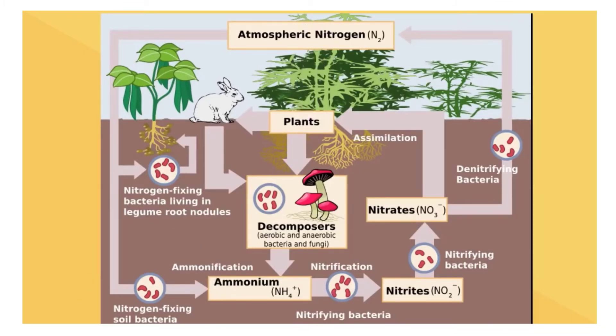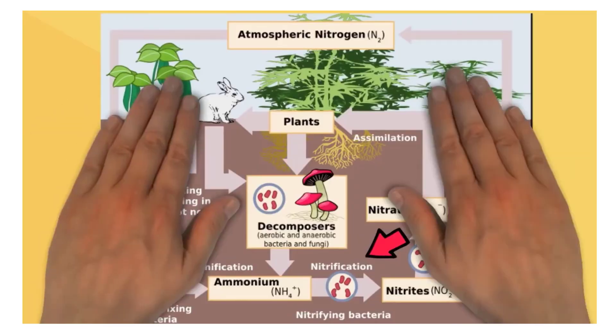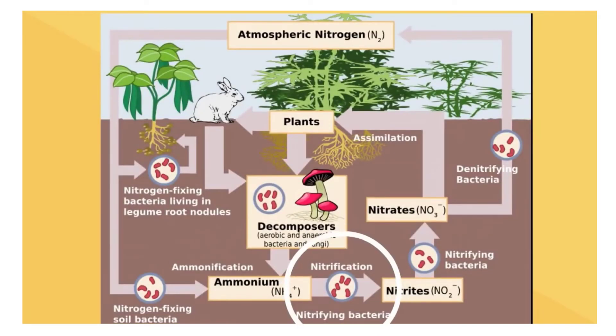Now ammonia is toxic so additional bacteria combines this ammonia with oxygen in a process called nitrification. At this point the nitrogen is in a form called nitrite. Additional nitrifying bacteria convert this nitrite to nitrate. At this point plants can absorb this nitrogen in a process called assimilation. However not all of the nitrate is absorbed but some of it goes to the bacteria that release the nitrogen to the atmosphere in a process called denitrifying.